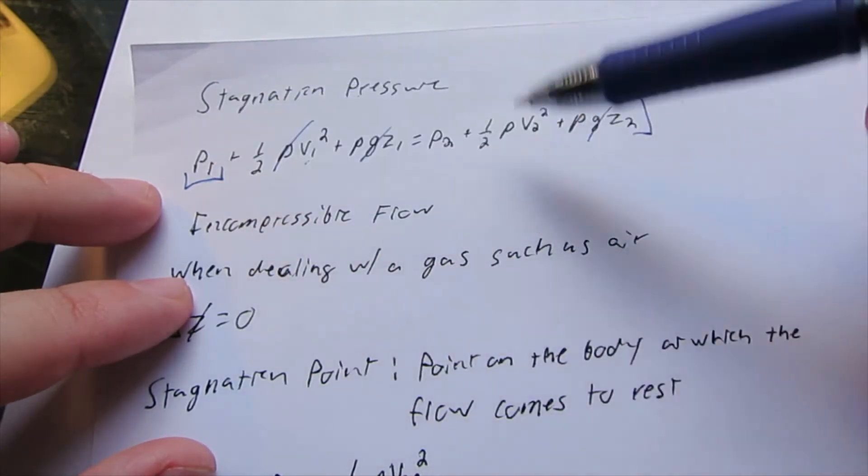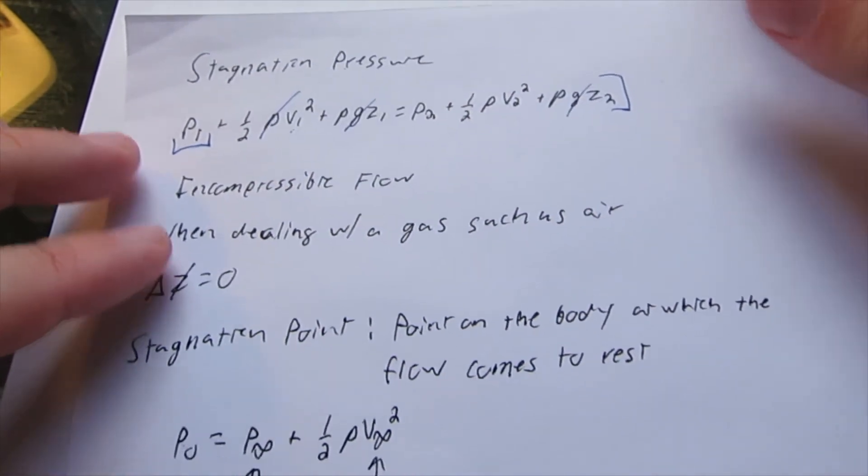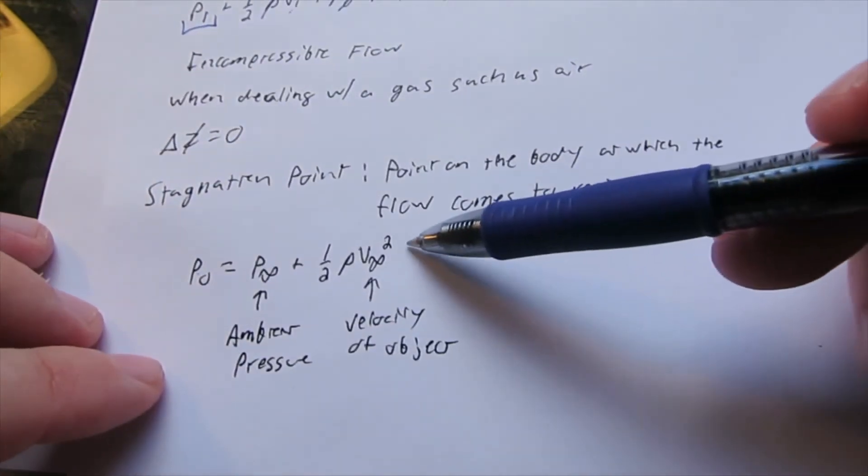Now we're just left with P₁ = P₂ + ½ρV₂², which can also be written as this.